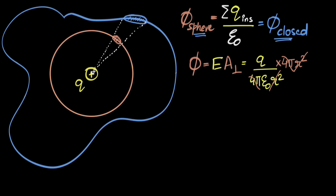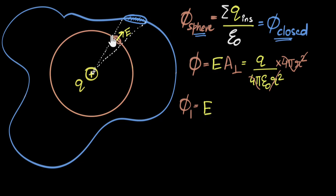What's the flux through the tiny sphere piece? Call it phi one. That would be the electric field at that point — which is q divided by four pi epsilon naught R squared, written as E — times the perpendicular area. Since this is a sphere, the surface is always perpendicular to the radius, and the electric field is along the radius, so this area automatically becomes perpendicular. If we call that area A, the flux through this piece is simply E times A.